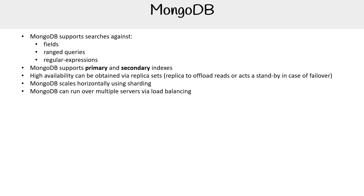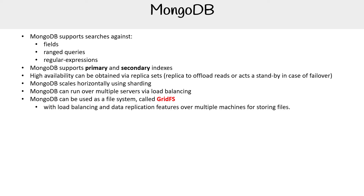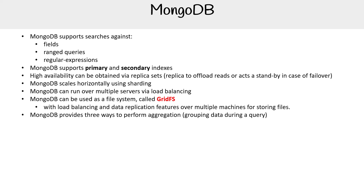MongoDB scales horizontally using sharding. It can run multiple servers via load balancing. MongoDB can be used as a file system called GridFS, with load balancing and data replication features over multiple machines for storing files. MongoDB provides three ways to perform aggregation: aggregation pipeline, map reduce, and single purpose aggregation.